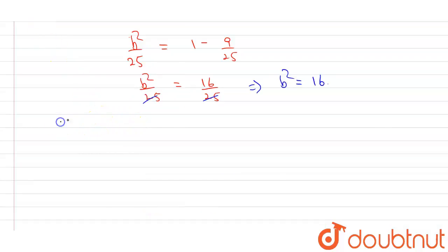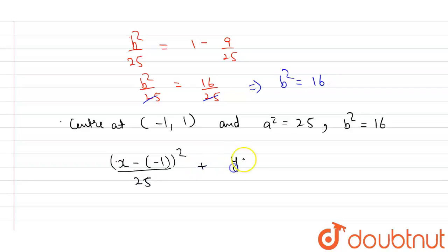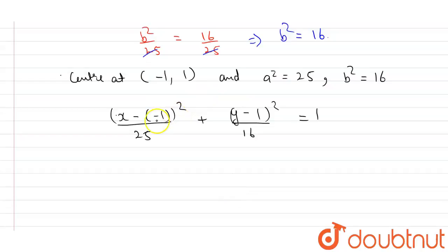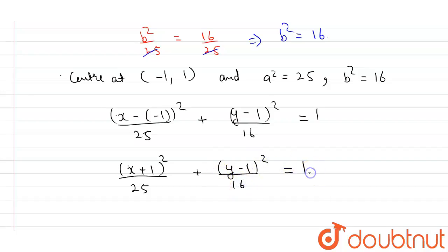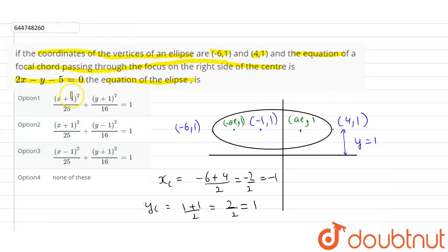The equation of the ellipse having center at (-1, 1), a² = 25 and b² = 16 can be written as: (x+1)²/25 + (y-1)²/16 = 1. This is the required equation of the ellipse, which corresponds to option 2. So option 2 is the correct answer for this question.